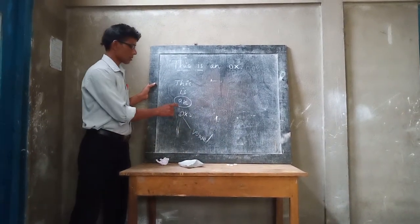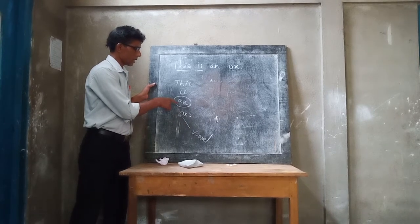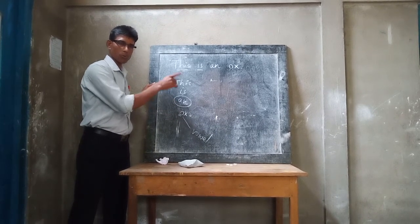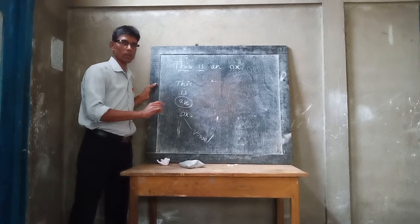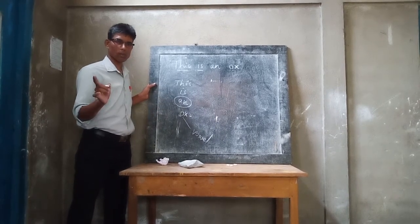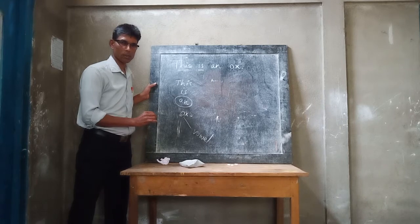So, an. We write 'an' before sound vowel, not the letter vowel consonant. Clear? Okay.